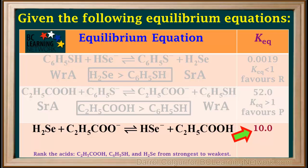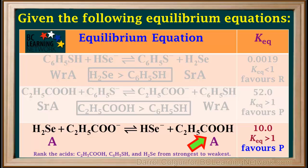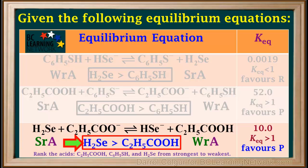Now we'll look at the KEQ value for the third reaction. We see that it's 10, which is greater than 1, so this equilibrium also favors products. Again, we identify the acids. H2SE on the left has one more proton than HSE⁻ on the right, so H2SE is the acid on the left. And C2H5COOH on the right has one more proton than C2H5COO⁻ on the left, so C2H5COOH is the acid on the right. We know that equilibrium favors the side with the weaker acid, and products are favored. So C2H5COOH is the weaker of the two acids, which means H2SE is the stronger of the two acids.